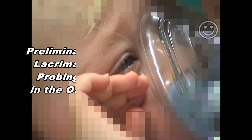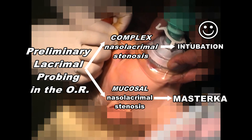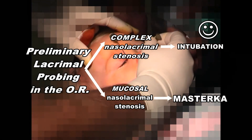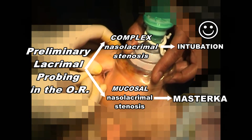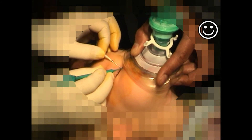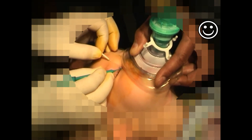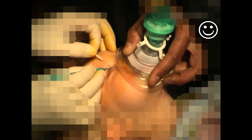In summary, careful preliminary lacrimal probing in the operating room is paramount for proper use of the Master Ka. It distinguishes by tactile sense the more common types of mucosal nasolacrimal stenosis from the less frequently seen cases with complex stenosis. By requiring metal-to-metal contact in the nasal fossa, it avoids false passages which always result in failure. It facilitates the correct choice of stent length, which should extend 5 mm beyond the site of nasal lacrimal obstruction without exceeding the distance between the punctum and the nasal fossa floor. When the Master Ka is appropriately selected and inserted properly, the complications are minimal and the success rate very high.